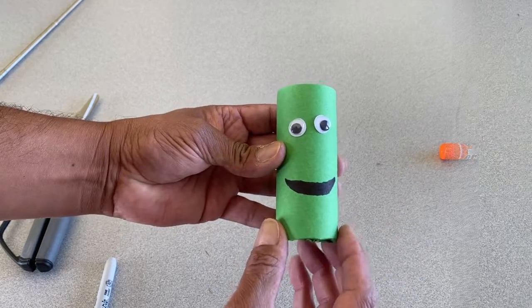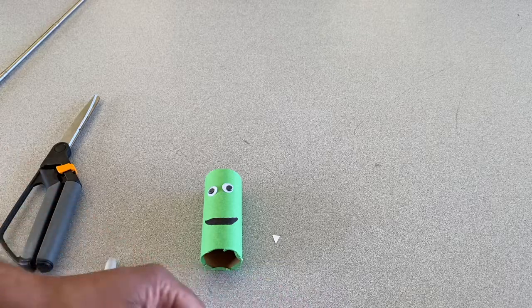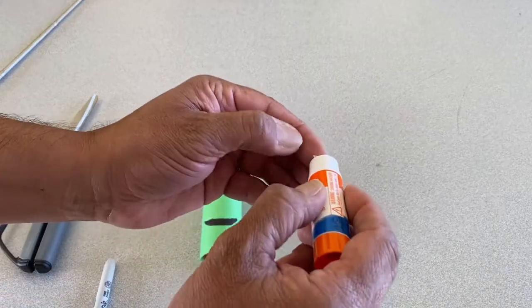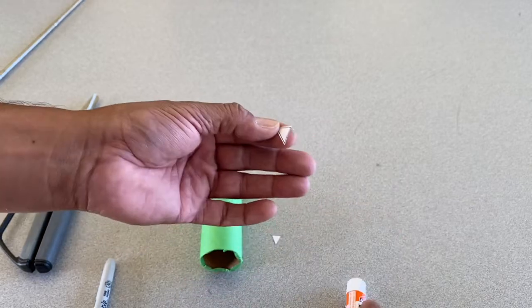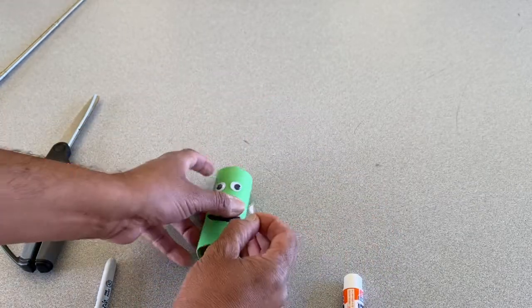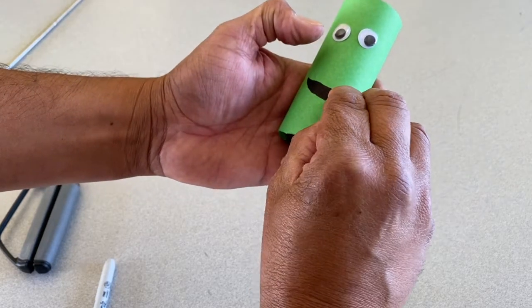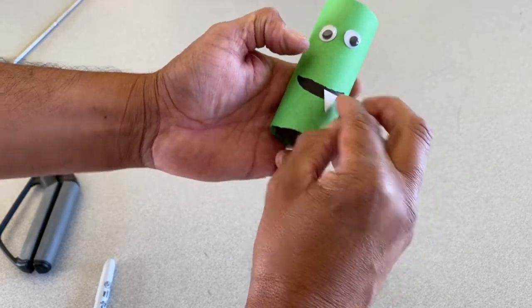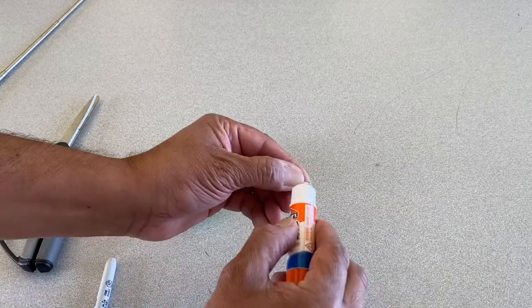For our next step we are going to get the fangs and apply glue to the entire fang. Remember that the fangs go downward and you place them on each side of the mouth. Remember that the fangs are the smaller triangles.